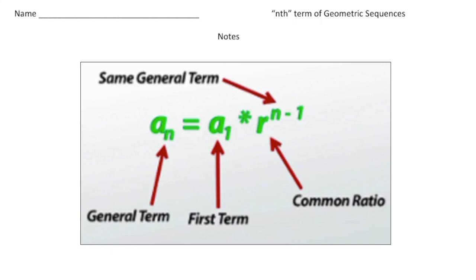Hey everybody, Dr. Dawson here. This is a video on how to find the nth term of a geometric sequence. When we say nth term, n can be any number — so I could say find the 10th term, the 20th term, or the 458th term. To figure that out, there's a formula you need to know: a₁ times the common ratio to the power of n minus 1.